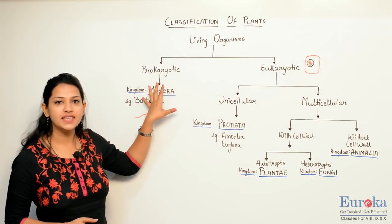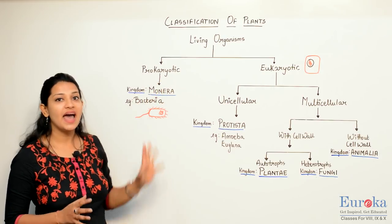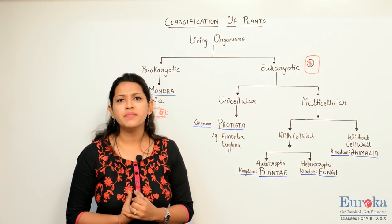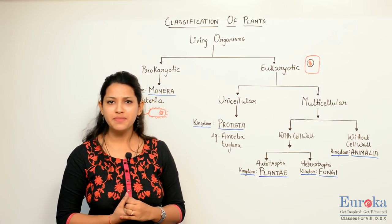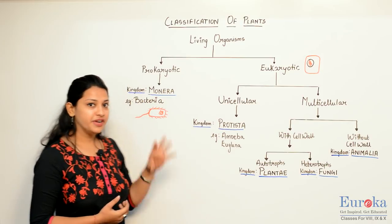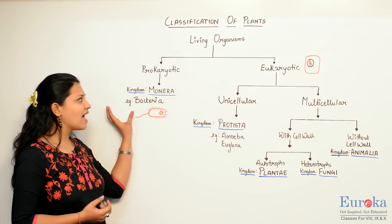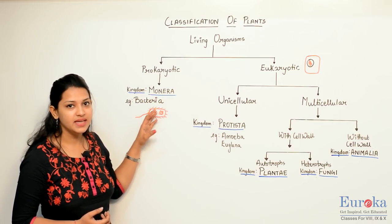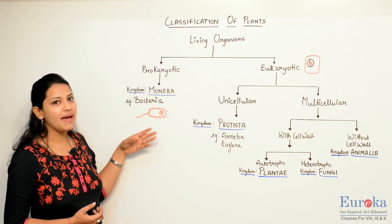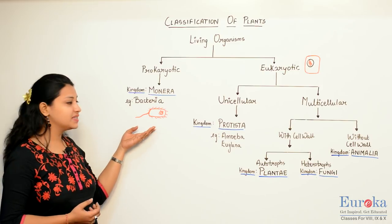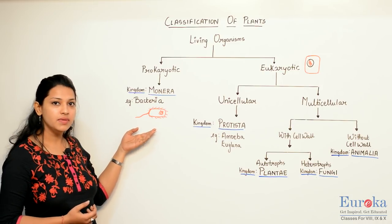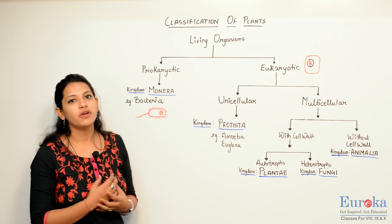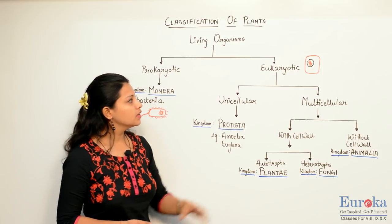Prokaryotic cells meaning they have the primitive nucleus. They do not have a membrane-bound nuclear membrane. For example, we have the kingdom Monera under it — for example, bacteria. As you see in the diagram, the nuclear material is not bound by a nuclear membrane.